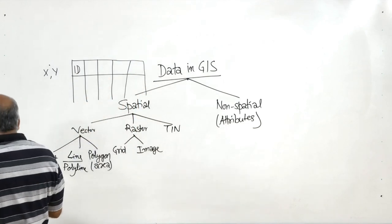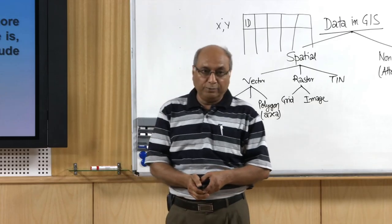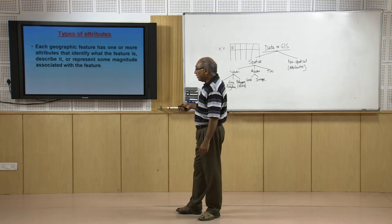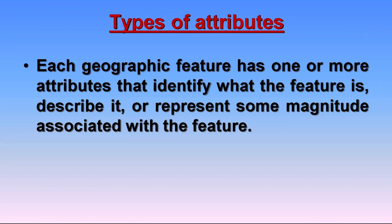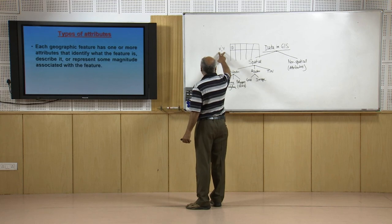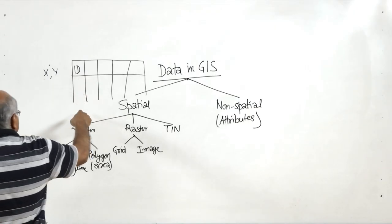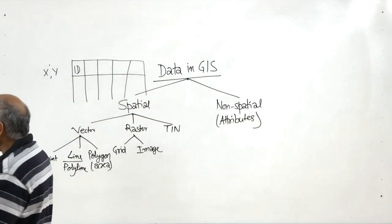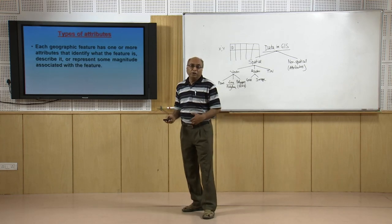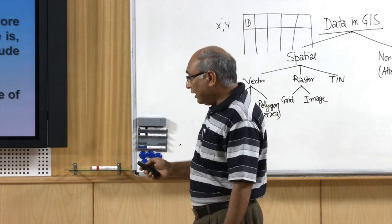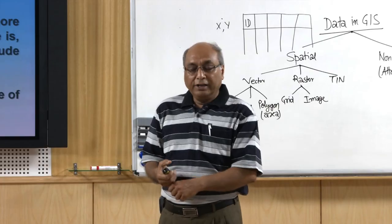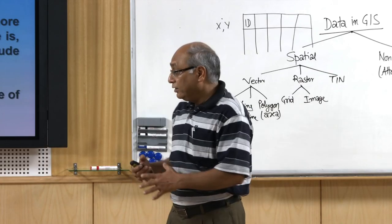If I have information about the water quality of that well I can store it in other columns as well. The purpose is not only to identify the feature but also to describe it — such as chemical qualities. Similarly, for earthquake epicenters, the special information is the x, y coordinates; then I can assign an ID, the date of occurrence, magnitude, focal depth, and so on. The more rich our attributes are, the more information we have about each vector entity, and the more advantages we can take in analysis.